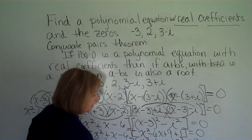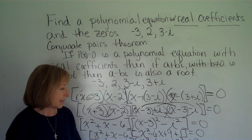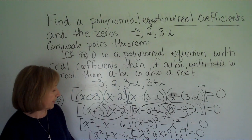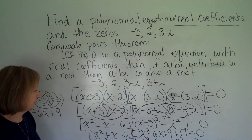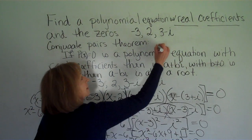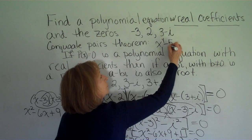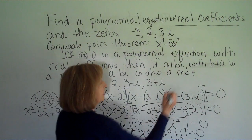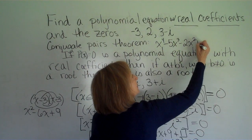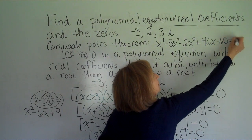And so this final polynomial equation is the equation of least degree that has those roots. So I'm going to copy this back up in a space next to where those partial list is. So that's x to the fourth minus 5x cubed minus 2x squared plus 46x minus 60 is equal to 0.